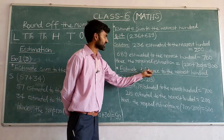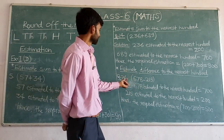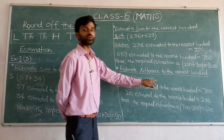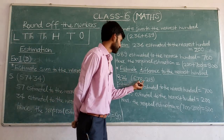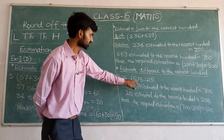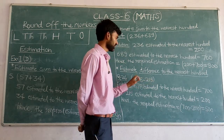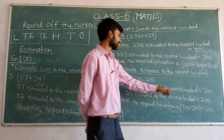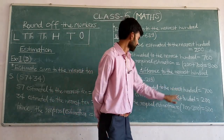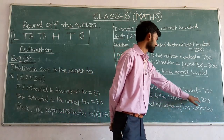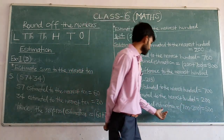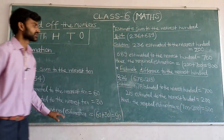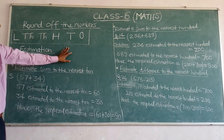Next is estimation of the difference of values. In question number 26, we have 678 minus 250. We have to estimate the difference. First, find the estimated value of the given numbers. 678 estimated to the nearest 100 is 700, and 215 estimated to the nearest 100 is 200. So the required estimation is 700 minus 200, which is equal to 500. This is the estimated value of the given numbers.